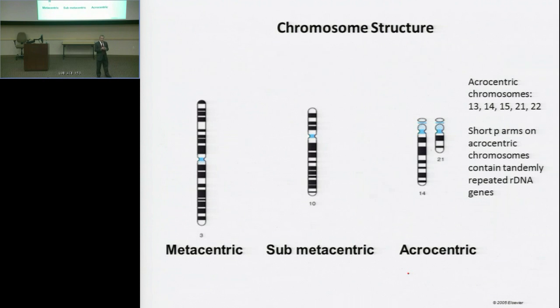Each of the five acrocentric chromosomes have essentially the same repetitive structure with large numbers of ribosomal RNA genes. We're going to later talk about a particular form of chromosomal translocation called a Robertsonian translocation, named after Liz Robertson.